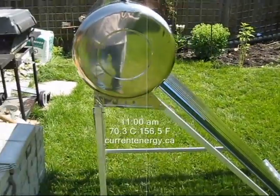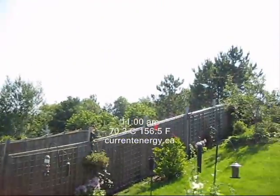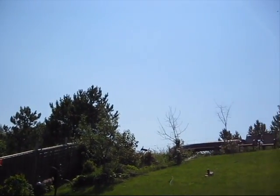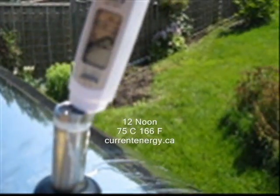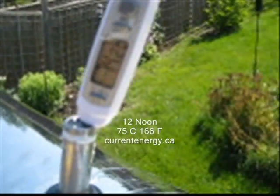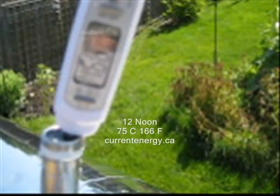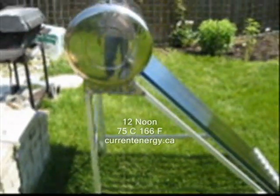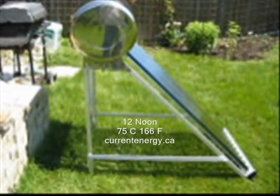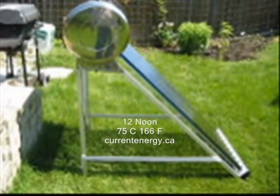We still have full sun today — not a cloud in the sky. Right now it's 12 o'clock and we're up to 74-75°C, 166 Fahrenheit. We have straight-on sun now with full sun, not a cloud in the sky.